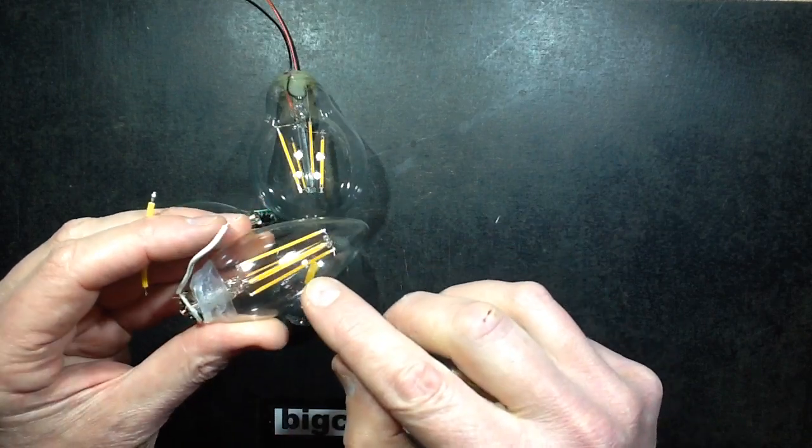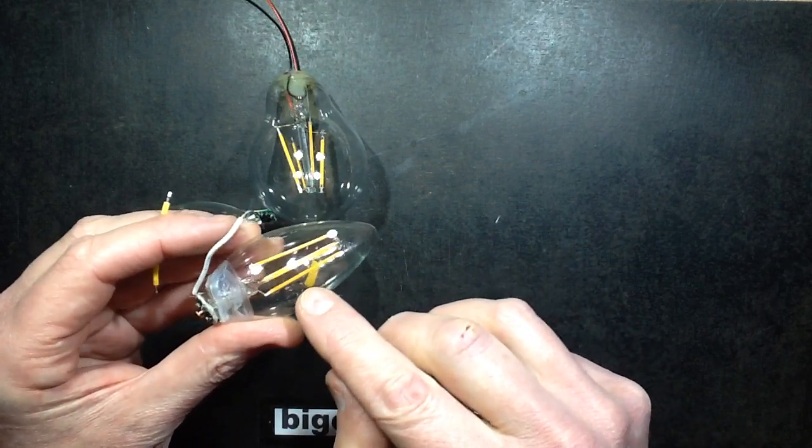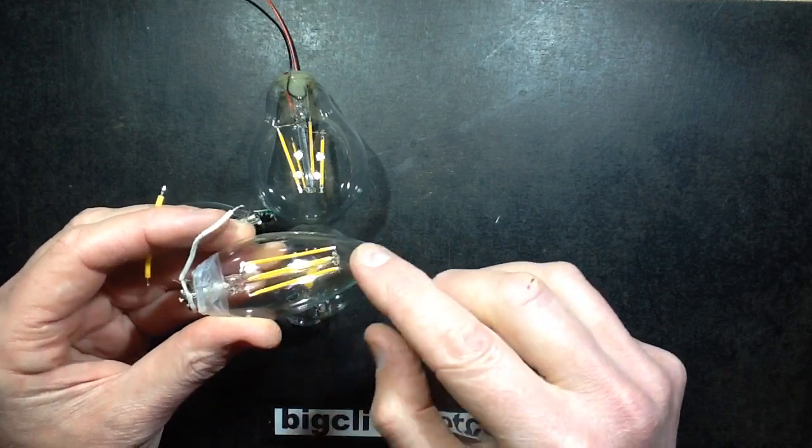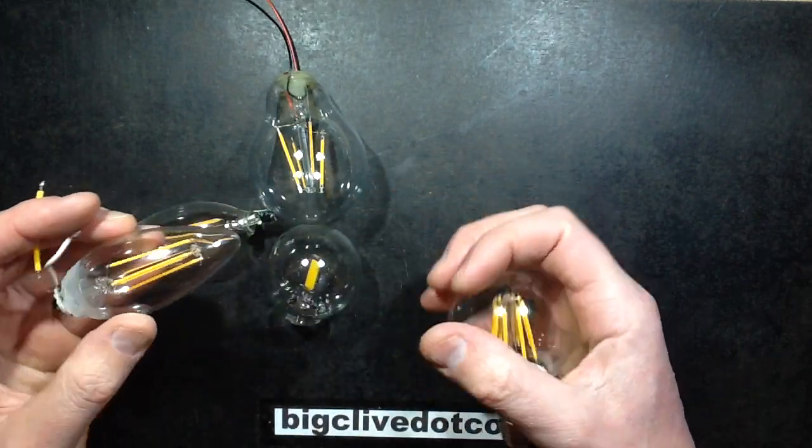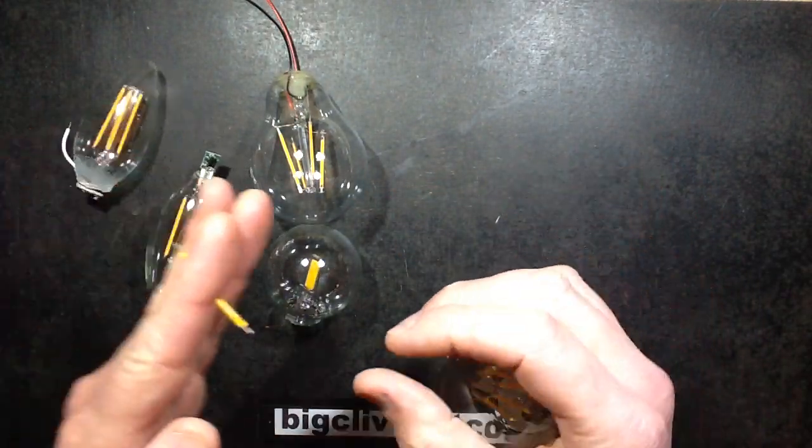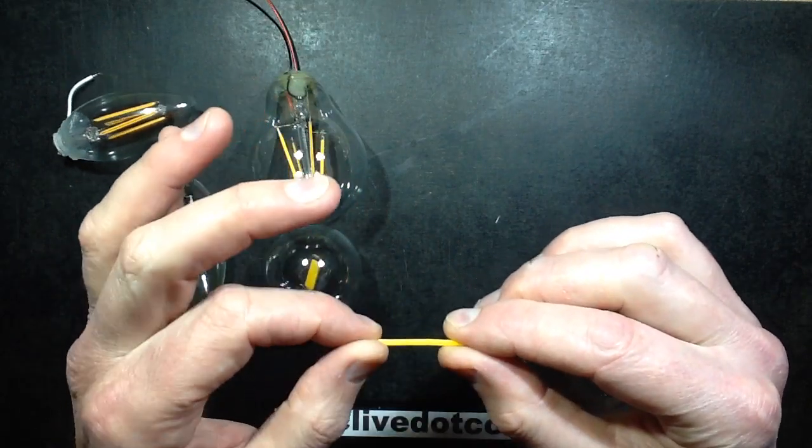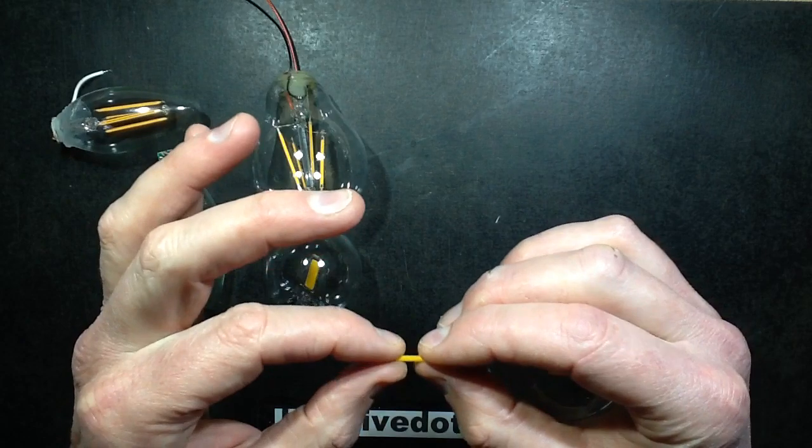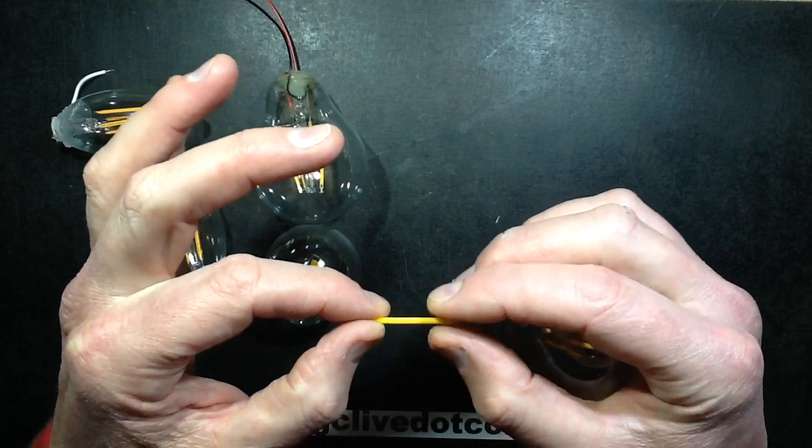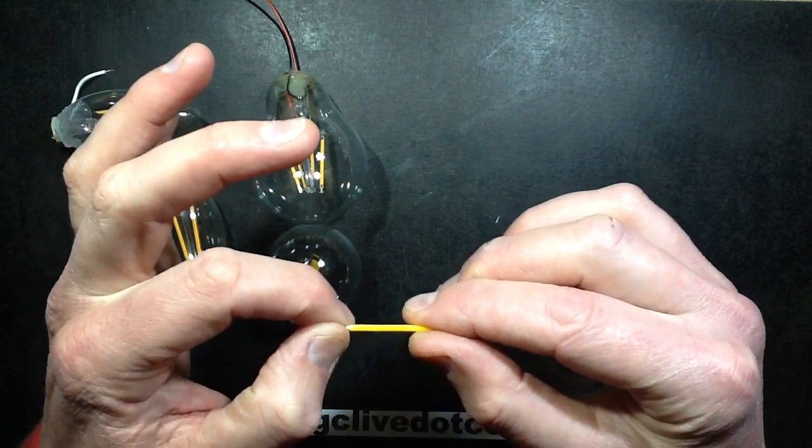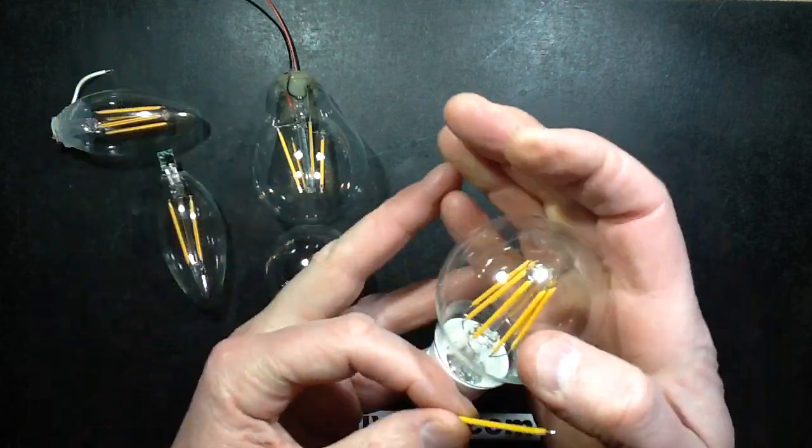This one is the first one that has these metal core filaments with the extruded, almost like a cylinder of the phosphor loaded silicon rubber around the outside. So that's quite interesting.